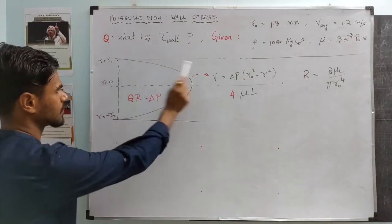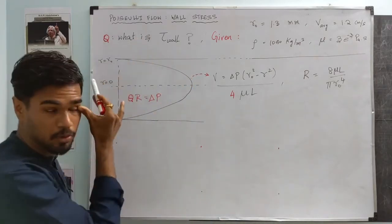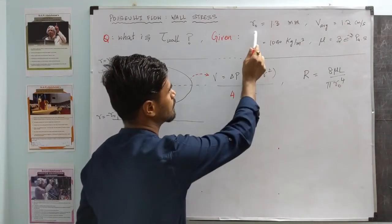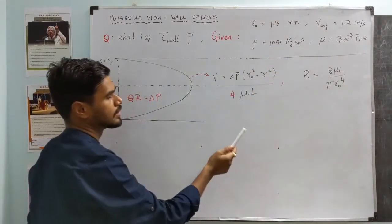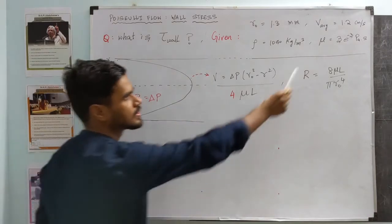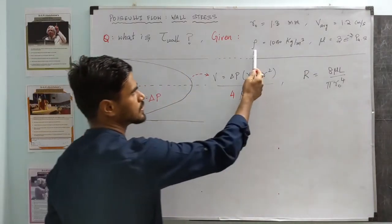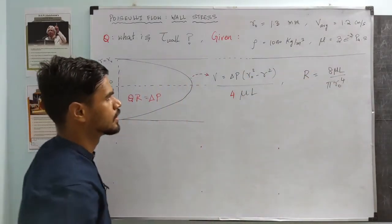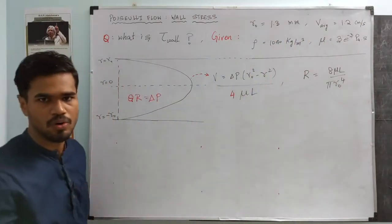Again, we are going to look at flow in a blood vessel - laminar flow, so it's going to be Hagen-Poiseuille assumption. We are given the radius of the blood vessel r₀. We are given the average flow velocity in the blood vessel v_avg. We also know the density of blood as well as the viscosity of blood.